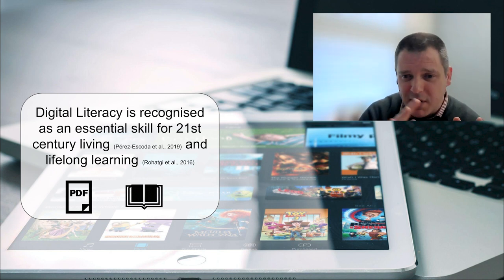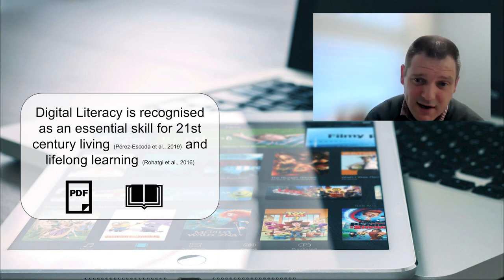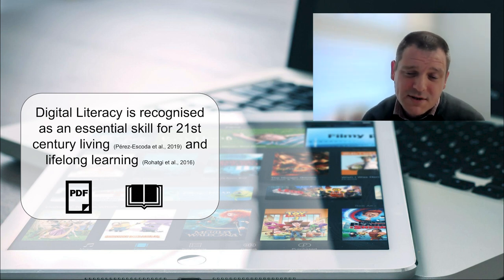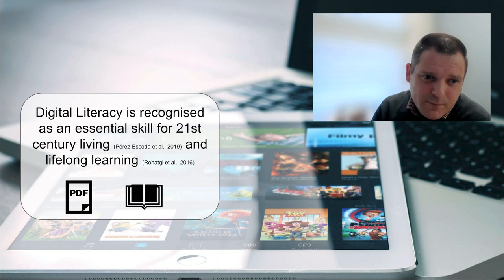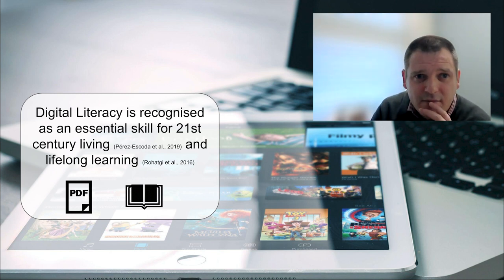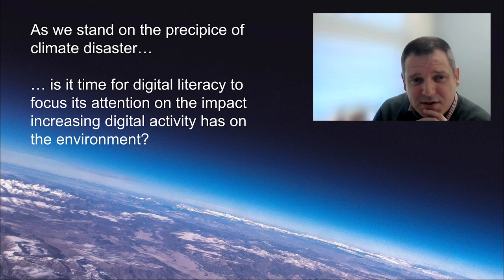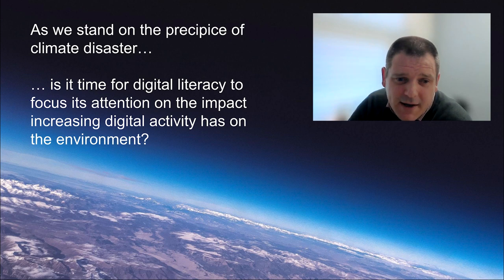There are many frameworks — from Digicomp to JISC to the Open University framework — some looking at slightly different cohorts. Digicomp is a very societal-wide framework, JISC looks more at higher education and adults, and there's a popular one from British Columbia focusing on post-primary. A lot of work has been done in this area, and digital literacy is very much recognized as an essential set of competencies for survival in the 21st century. But what we really want to do is move the conversation forward slightly, because we're on this precipice of climate disaster.